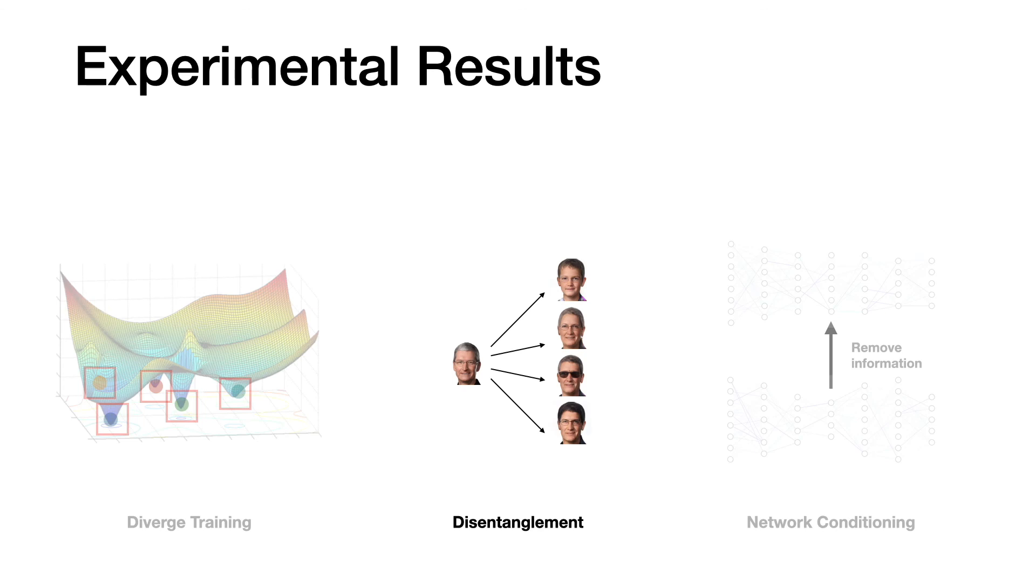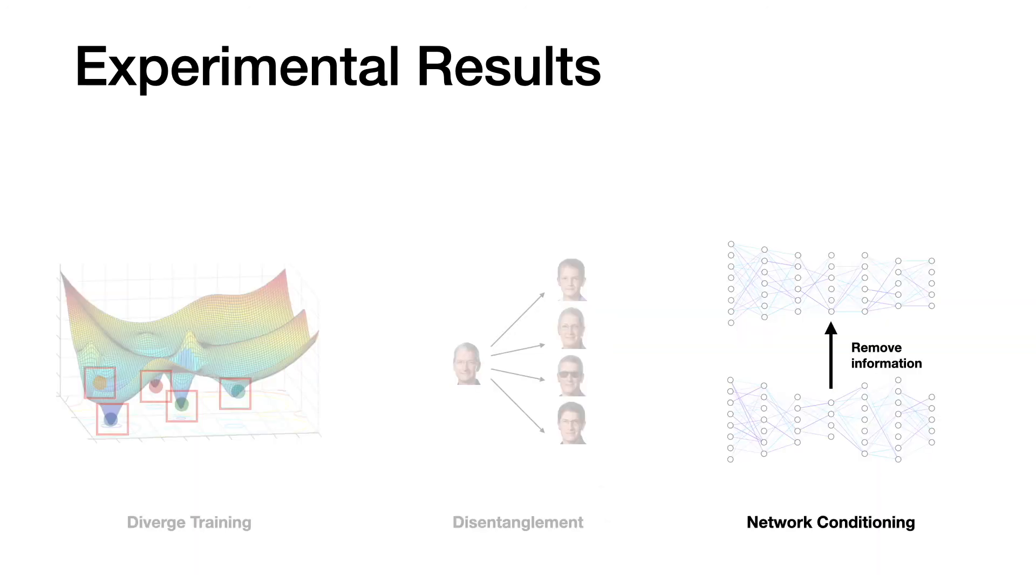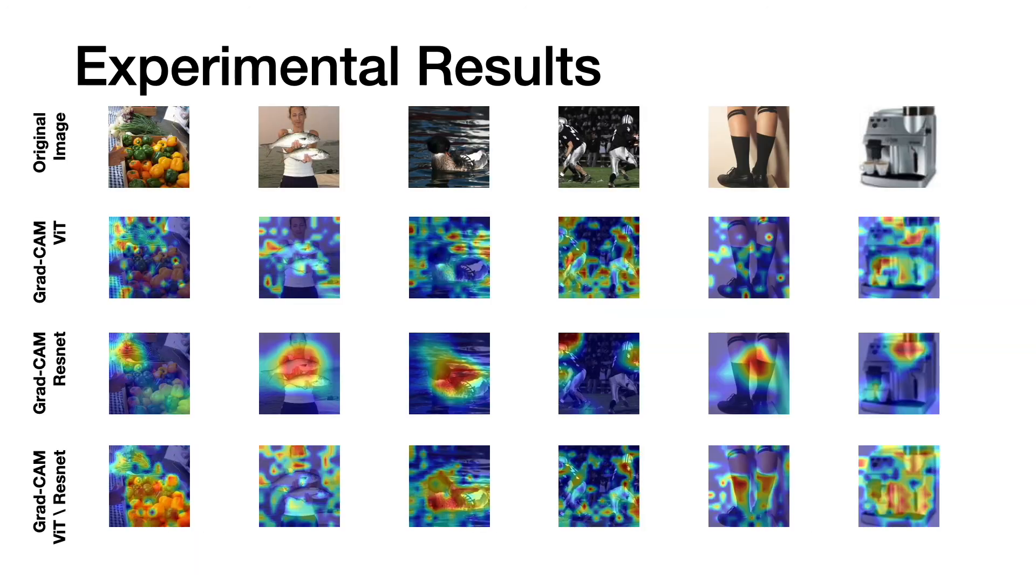For disentanglement, our method shows the ability to change several attributes of interest like age and gender using some semi-supervised learning labels. Finally, for network conditioning, we show that by removing ResNet from ViT, it can still learn meaningful results with respect to the heatmap using GradCAM.